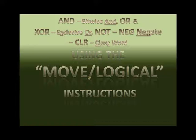Now the NOT and the NEGATE — people get those mixed up. The NEGATE instruction is the one you would most normally think of. If you put in a value of 6 and execute a NEGATE, you get negative 6. If you put in negative 6, you get 6. It just changes the sign. Whereas the NOT instruction goes through bit by bit and changes all the 1s to 0s and all the 0s to 1s.